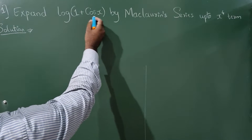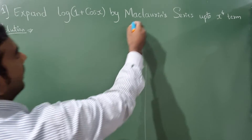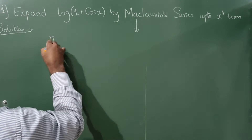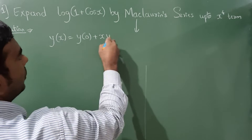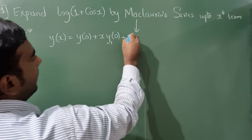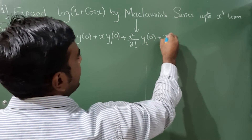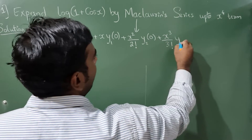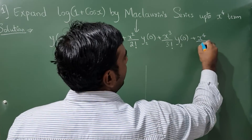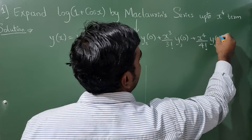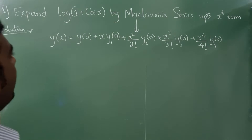Expand log(1 + cos x) by Maclaurin series up to x⁴ terms. The formula for Maclaurin series is: y(x) = y(0) + x·y₁(0) + (x²/2!)·y₂(0) + (x³/3!)·y₃(0) + (x⁴/4!)·y₄(0). Since we need terms up to x⁴, we stop here.